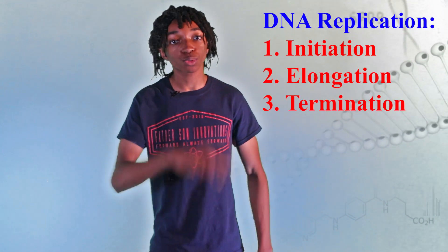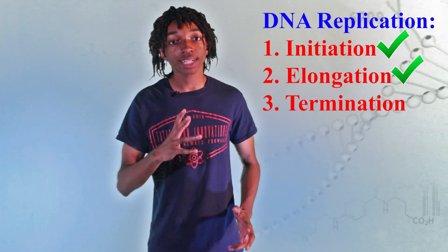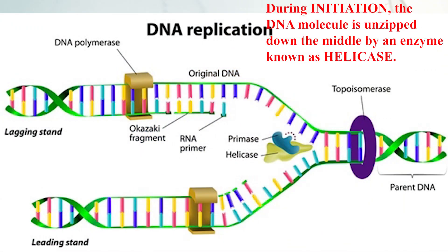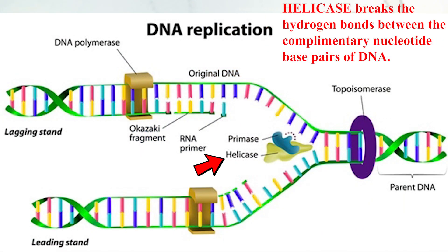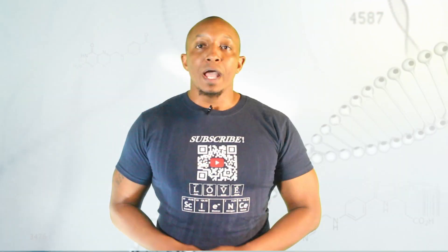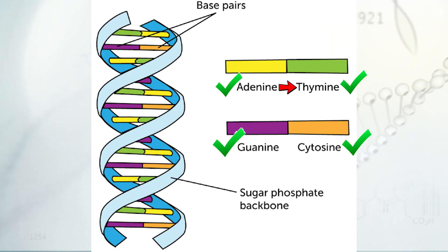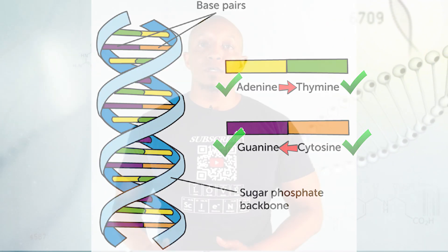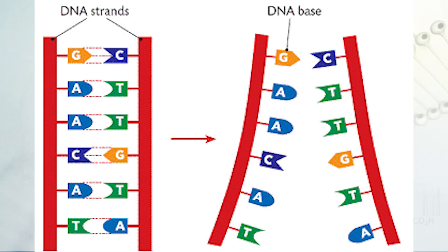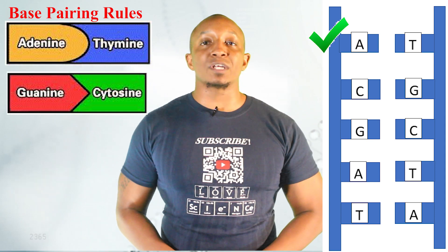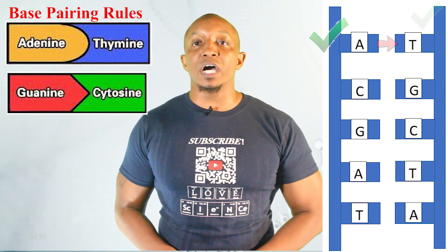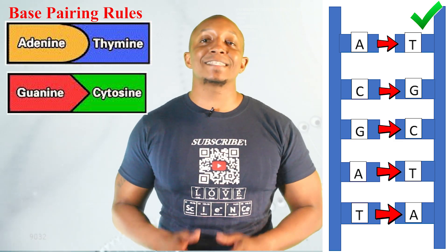Let's break down replication in three simple steps: initiation, elongation, and termination. First, during initiation, the DNA molecule is unzipped down the middle by an enzyme known as helicase. Helicase breaks the hydrogen bonds between the complementary nucleotide base pairs of DNA. These base pairs are adenine, thymine, cytosine, and guanine, where adenine pairs with thymine and cytosine pairs with guanine. Once these hydrogen bonds are broken, the DNA molecule is separated into two strands. For example, if one half of the strand consists of ACGAT, then the complementary other half of the strand has the bases TGCTA.